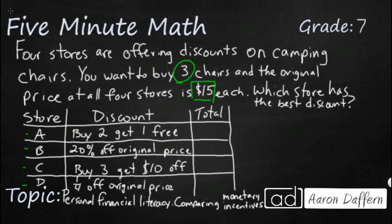So store A is going to be pretty easy. Buy two, get one free. So if I get two different chairs, that's going to be $15 plus $15. That's going to get me $30 total. And if I buy those two, I'm going to get the third one for free. So I end up with three chairs. It's only going to cost me $30. Seems like a pretty good discount, but we don't know until we compare against all the rest.